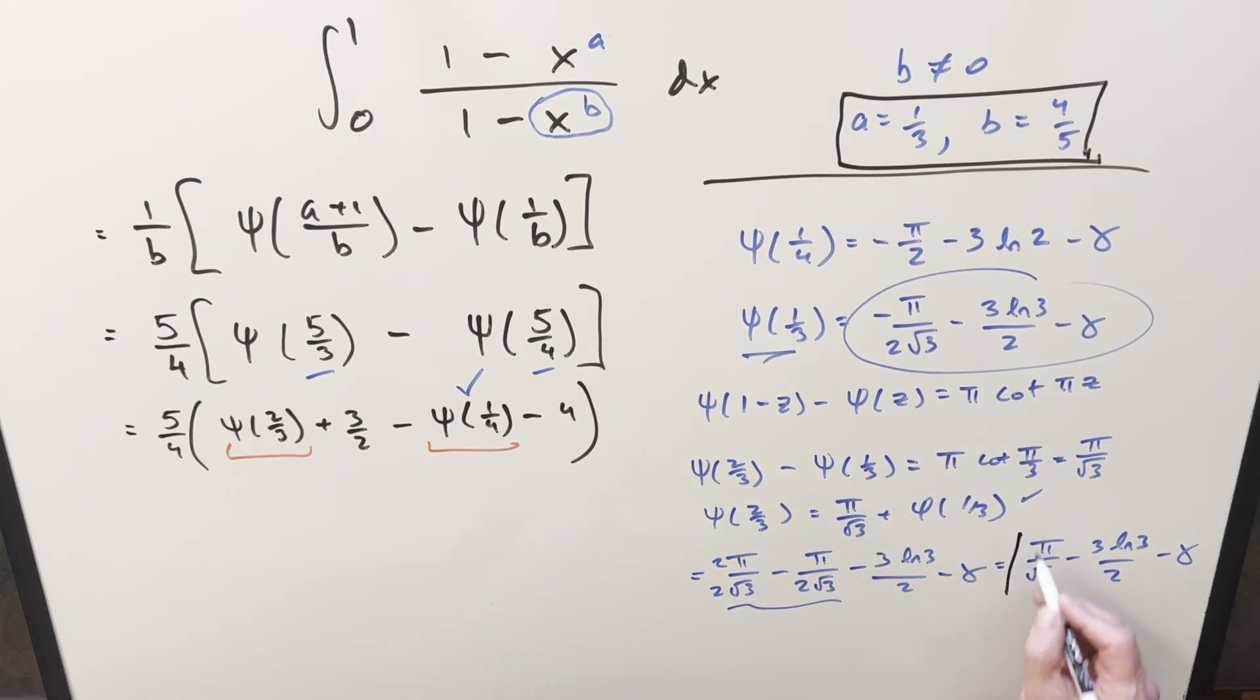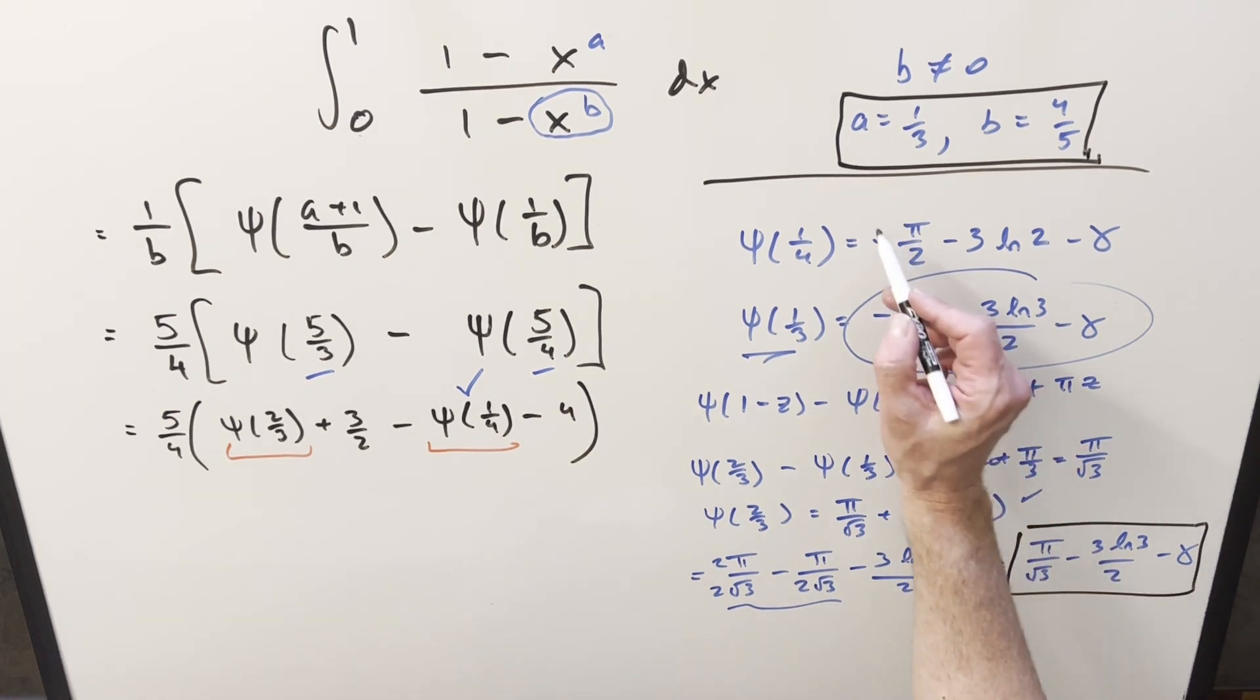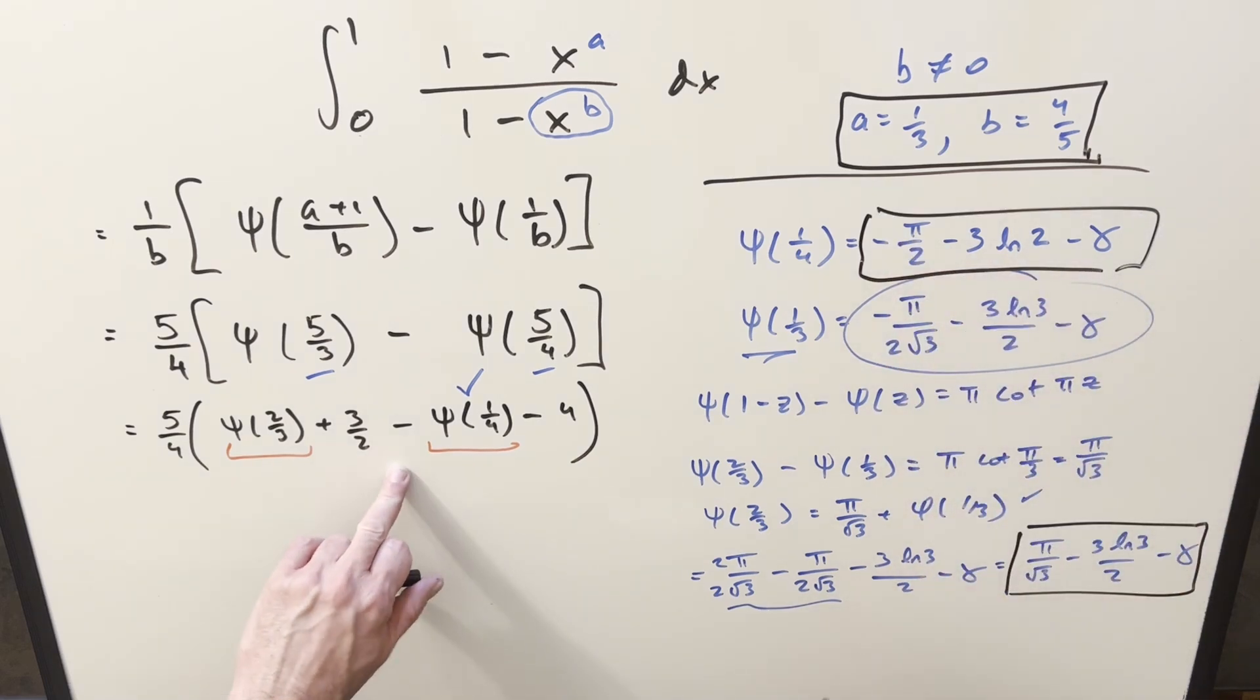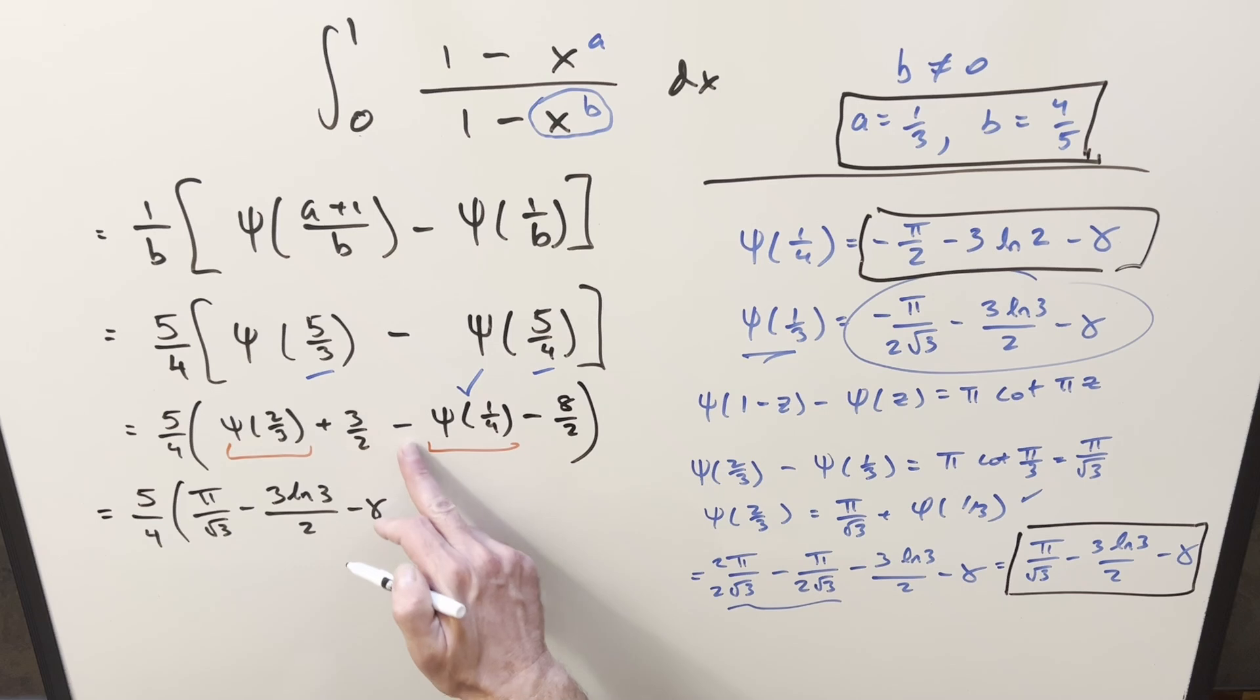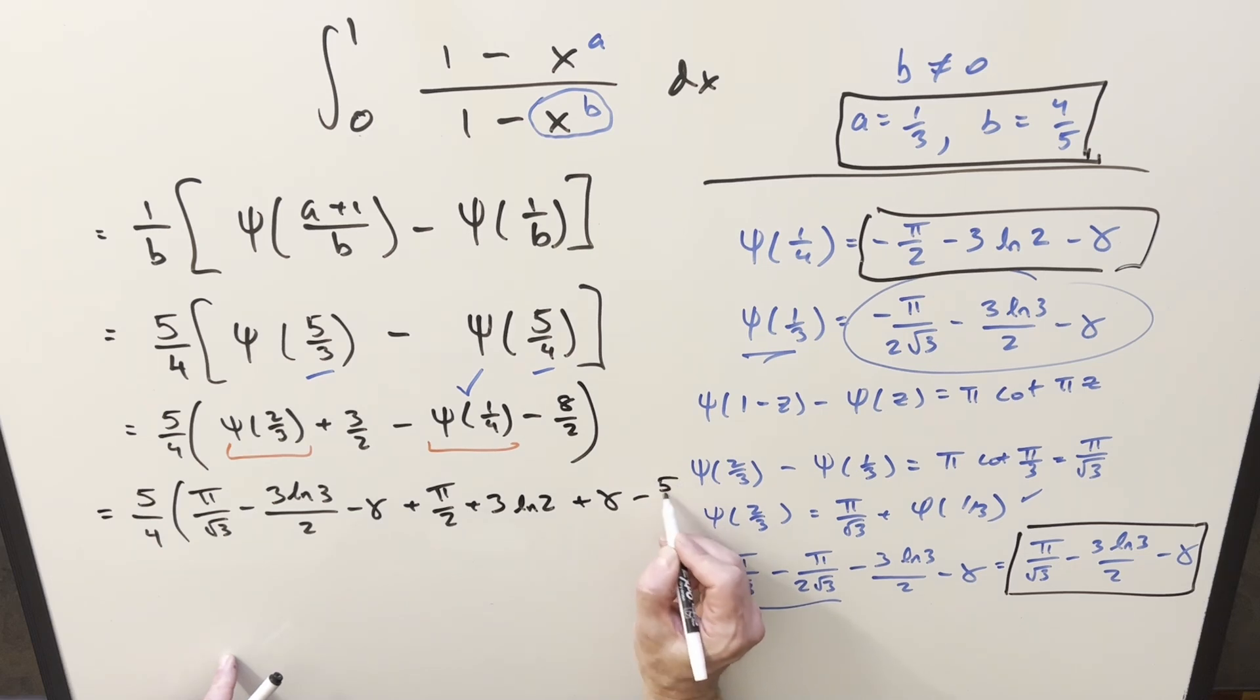So all I need to do is take this value here and our digamma of 1/4 value here and plug it back in. Now I'm going to want to combine this 3/2 and minus 4. So minus 4 I can write as 8/2. So then we still have our 5/4 in front. Digamma of 2/3 is going to be this. I'll distribute a minus sign into this formula. So this becomes plus pi/2 plus 3 ln 2 plus the constant. And then 3/2 minus 8/2 is -5/2. Euler-Mascheroni constants are going to cancel.